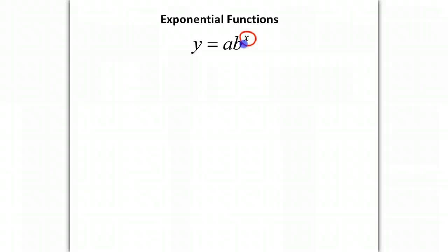So first, let's talk about what this means. We have y equals ab^x. A is what we call our starting amount, and a will always be a positive number, so a is always greater than 0.